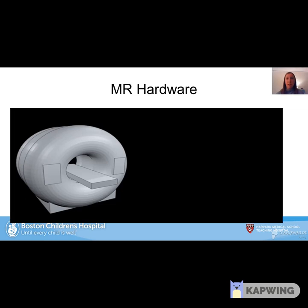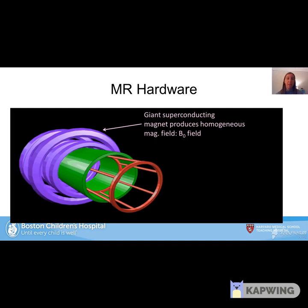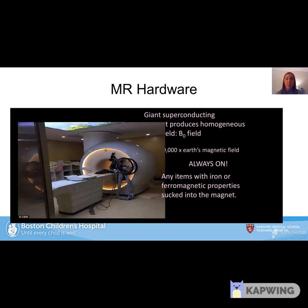Before getting into MR imaging, let's go over some of the hardware used. An MR machine has three main internal components. The first is a giant superconducting magnet that produces a homogeneous magnetic field — the B-naught field — about 10,000 times stronger than the Earth's magnetic field. This magnet is always on, weekends, holidays, every day. Once the MR machine is commissioned, it operates at that field strength for its entire lifetime. Walking in with a cell phone, credit cards, or anything ferromagnetic could cause them to be sucked into the magnet or wiped.